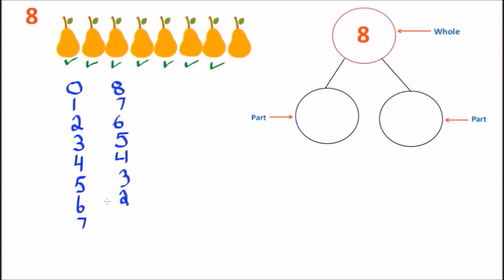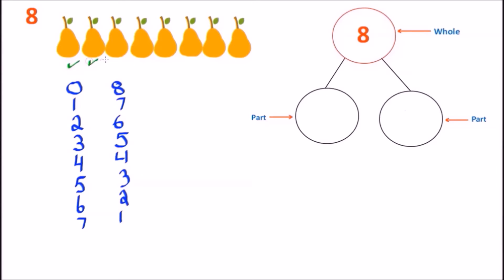Let's keep counting: 1, 2, 3, 4, 5, 6, 7. So now we have 7 pairs, so we put the 7. How many pairs remain? We have 1, so let's put the number 1. Our next number bond is a 7 on the left side and a 1 on the right. We had a 1 and a 7 in the beginning — two different ways of writing the same numbers, both giving us the number 8.